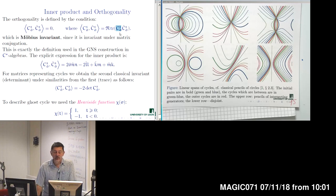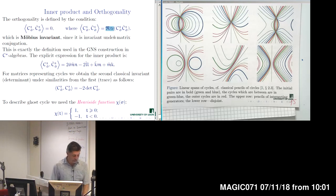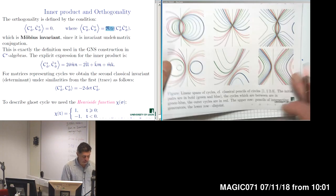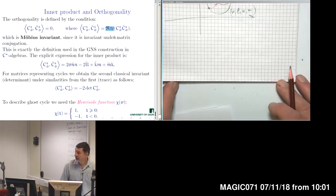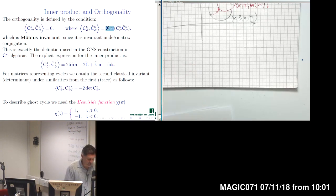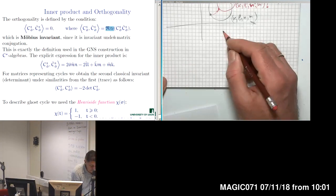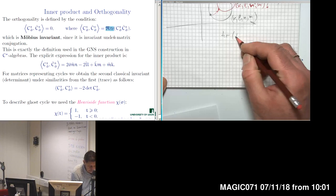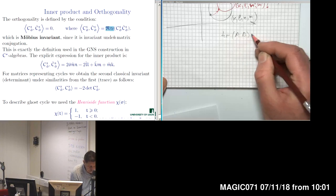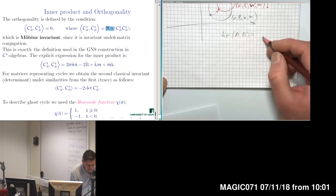With matrices C and C-tilde multiplied, the result will again be a two-by-two matrix. For this matrix, we take the trace and then the real part of this trace. One of the remarkable properties of trace is that it is a matrix invariant under matrix conjugation. A key property to recall is that trace(AB) equals trace(BA), although the products AB and BA are different matrices — they have the same trace.